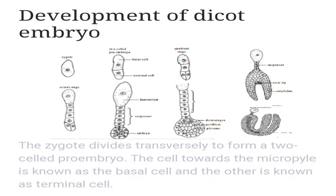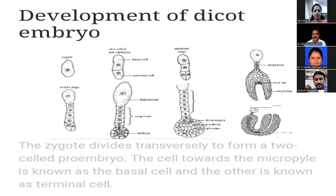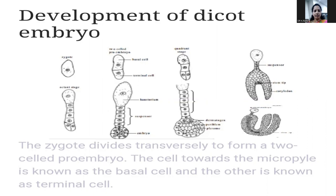The outer cell layer becomes the dermatogen or epidermis. The inner cells form the periblem, and the central region forms the plerome. The periblem gives rise to the cortex while the plerome forms the stele. These layers arise through successive periclinal and anticlinal divisions — from two to four to eight cells in the octant stage, with the epibasal and hypobasal regions both contributing.